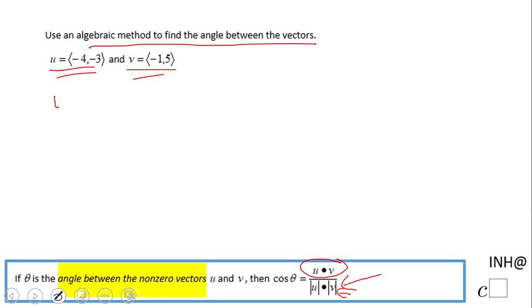Let's break down the problem. The dot product of u and v will be negative 4 times negative 1 plus negative 3 times 5. So we get positive 4 minus 15 which equals negative 11. The dot product is negative 11.